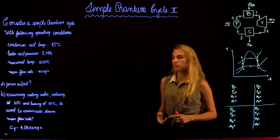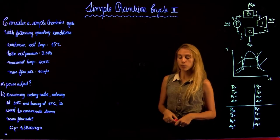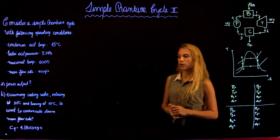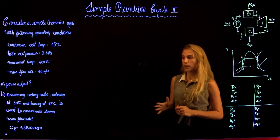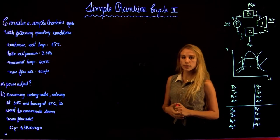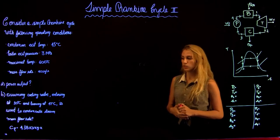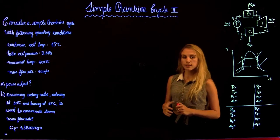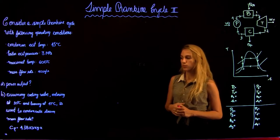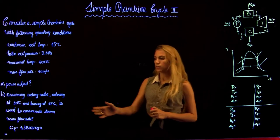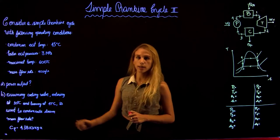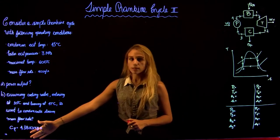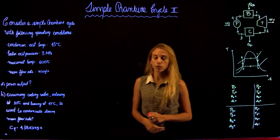We are first asked to calculate the power output. Then we are told to assume cooling water entering at 10 degrees Celsius and leaving at 17 degrees Celsius, which is used to condensate the steam in the condenser. Knowing this, we are asked to calculate the mass flow rate. We are also given the CP of the cooling water.